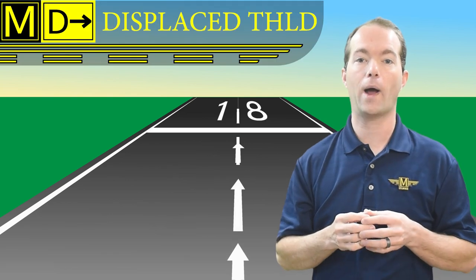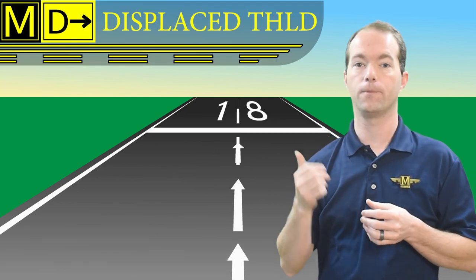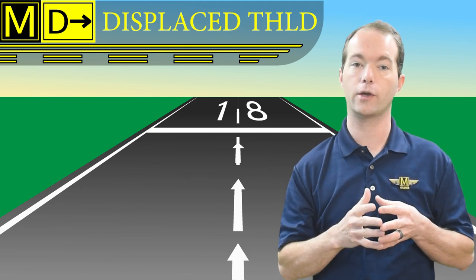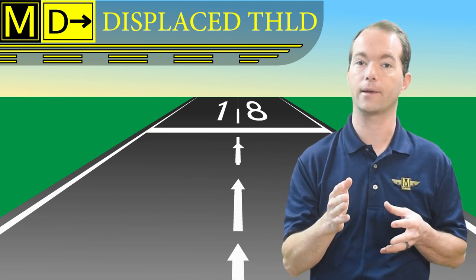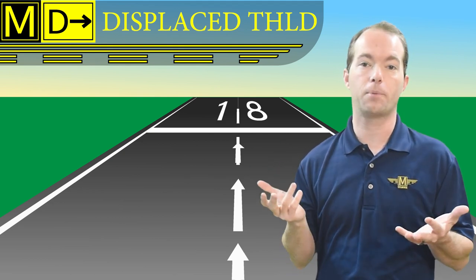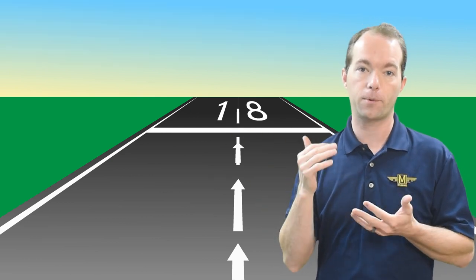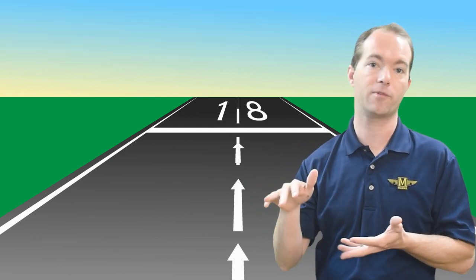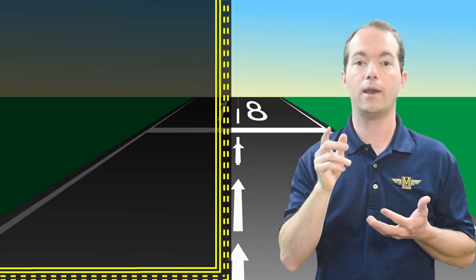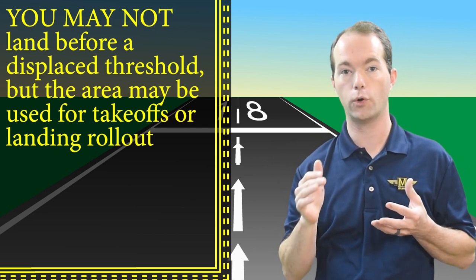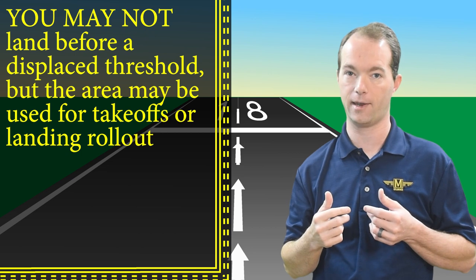Maybe you saw those white arrows leading up to the threshold — this means that the runway has a displaced threshold, meaning the runway is shorter for landing. Thresholds typically get displaced as housing or other development gets built up around the airport, and displacing the threshold further down the runway keeps the planes higher on approach. You cannot land before the displaced threshold, but you may take off in that area or use it for landing rollout on the opposite end.